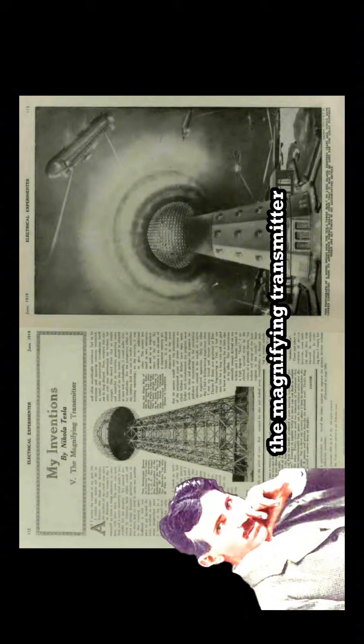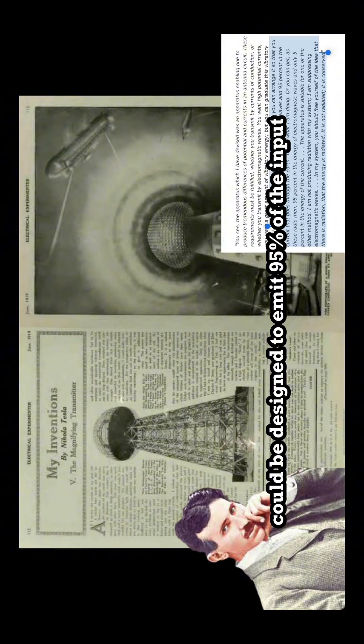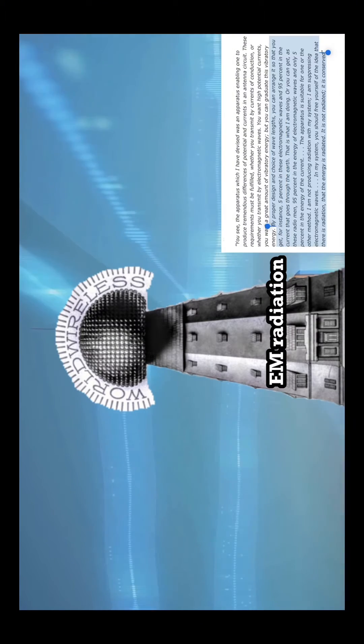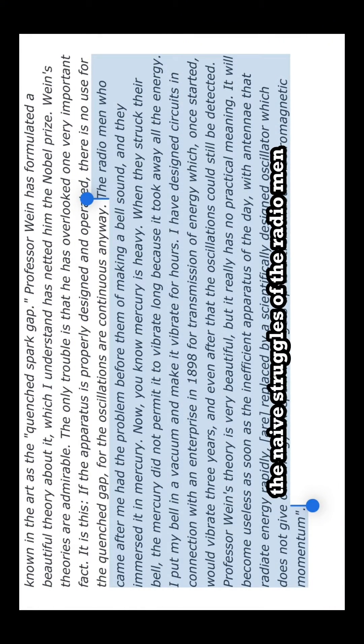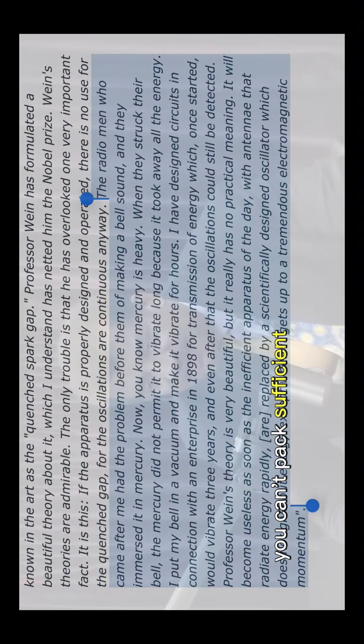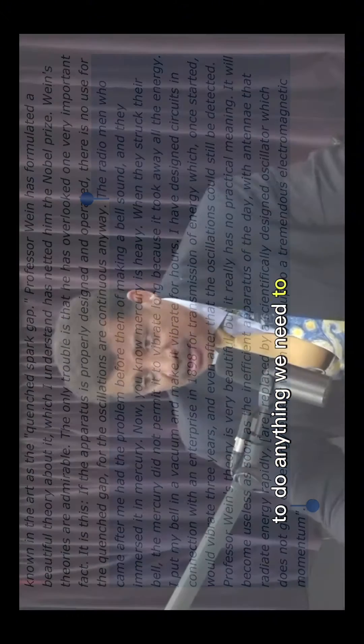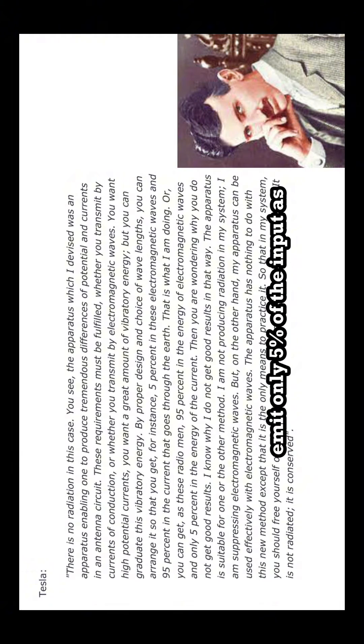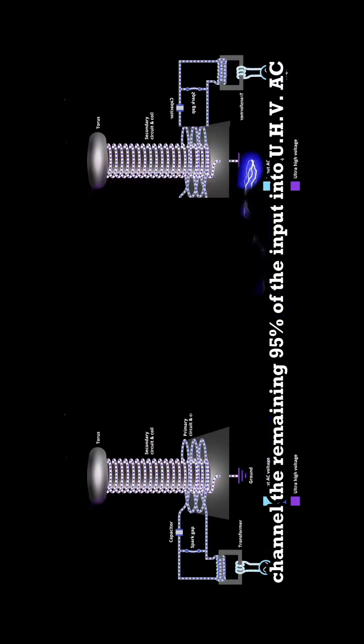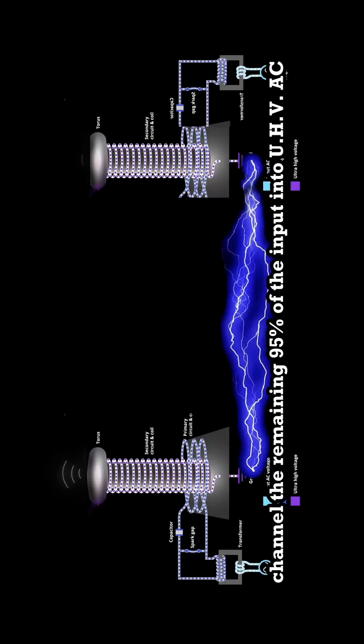Tesla himself even stated that the magnifying transmitter, if so desired, could be designed to emit 95% of the input energy from the upper terminal as EM radiation and direct only 5% as currents into the ground. Though he explicitly claimed this to be the naive struggles of the radio men. You can't pack sufficient energy in your radio wave to do anything we need to do mechanically. Conversely, Tesla explained that his more favorable approach was to design it to emit only 5% of the input as EM radiation and therefore channel the remaining 95% of the input into UHVAC straight into the ground. Serendipitously, this demonstrates the transmitter's dual capability, wireless radio wave communication through the air, in addition to non-interference mechanisms for the in-ground power signal transmission and transmitting information frequency bandwidths.